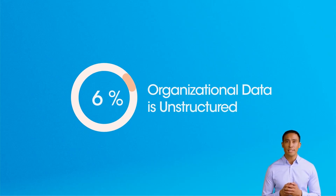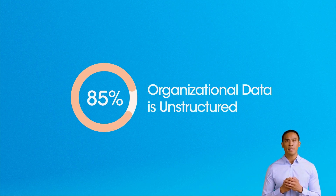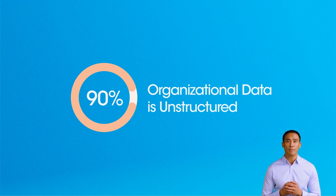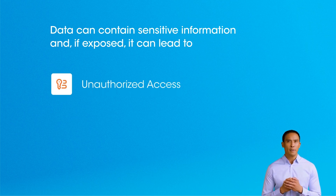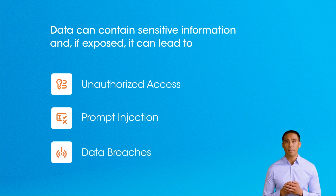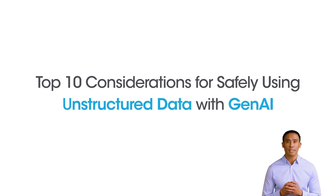Did you know that 90% of organizational data is unstructured, with organizations increasingly using LLMs to power their Gen AI applications? This unstructured data is often leveraged for use cases such as enterprise AI search and chatbots. However, unstructured data often contains sensitive information, and if exposed, can lead to governance, privacy, and security risks that traditional data management tools aren't equipped to handle. In this video, we'll discuss the top 10 considerations for safely using unstructured data with Gen AI to build trusted and enterprise-grade applications.